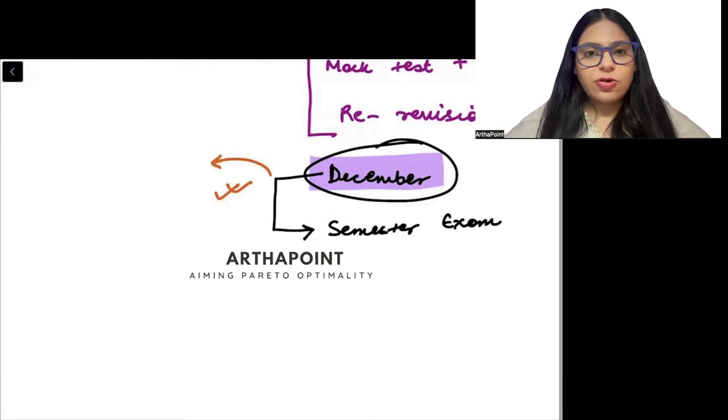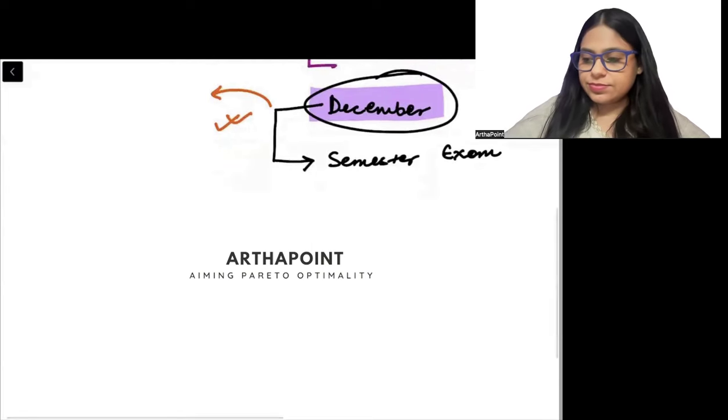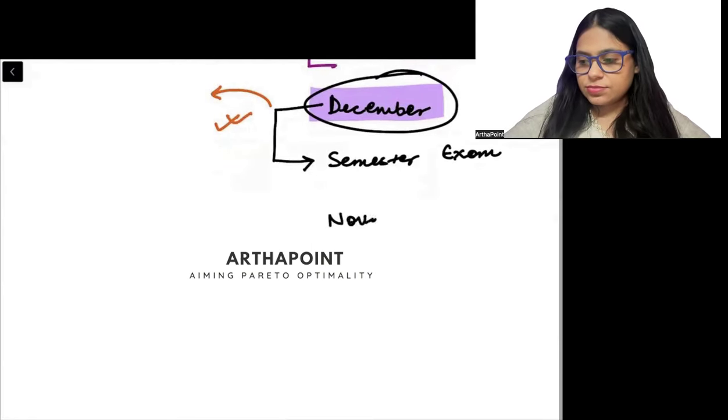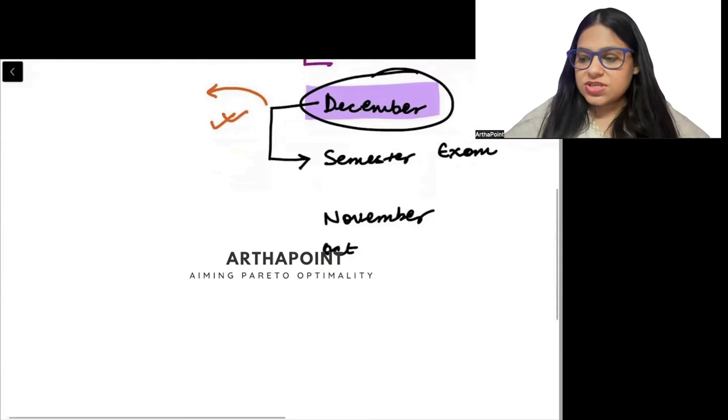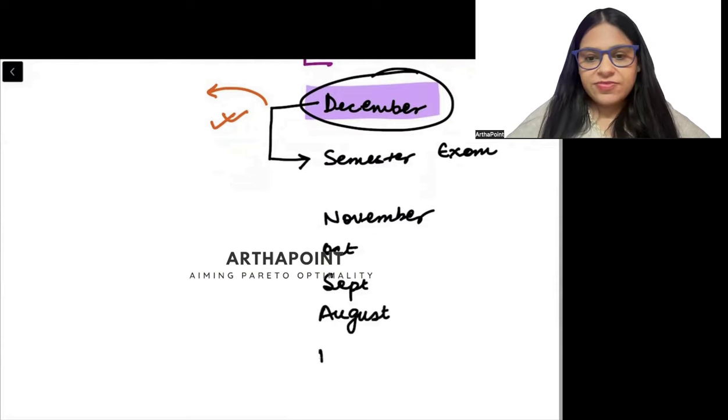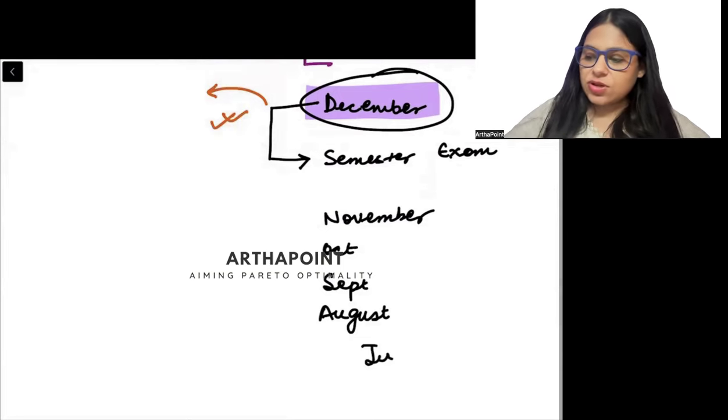So December will be your semester exam and I am pretty sure that you will not be studying for your entrance. You have to clear these exams also. November, October, September, August, and 15 days of July. 17th of July - I will just take 12 days to 14 days of July.